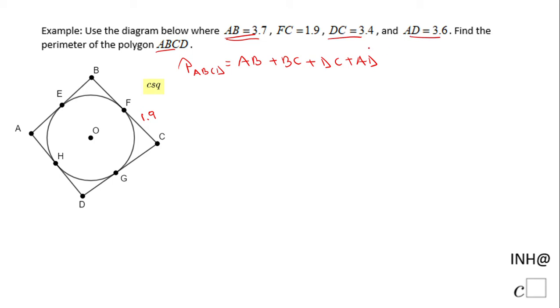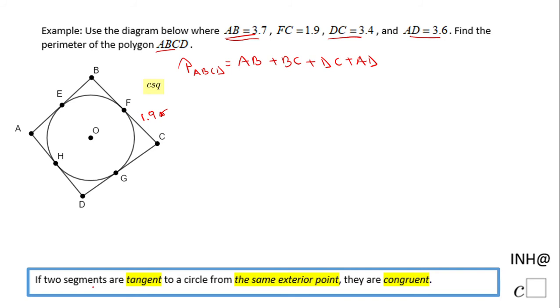We know three sides here: AD, DC, and AB. The only one we do not know is BC. We know just this part, so we're going to have to do a little bit of work to find BC. For that reason, we're going to use this theorem that says if two segments are tangent to a circle from the same exterior point, they are congruent. This is a very important theorem. The first thing I can say is GC is 1.9 also, because these two segments are congruent. They represent the tangent from point C to point F and point G.